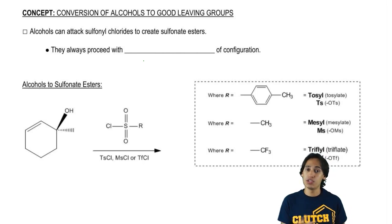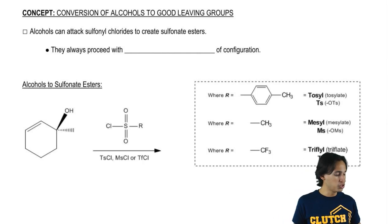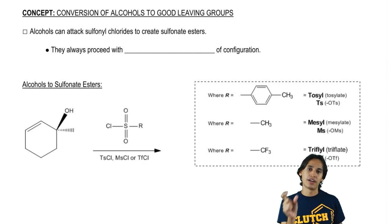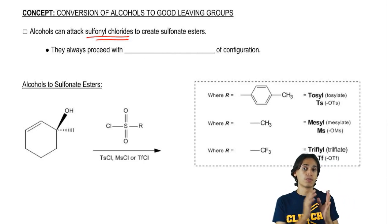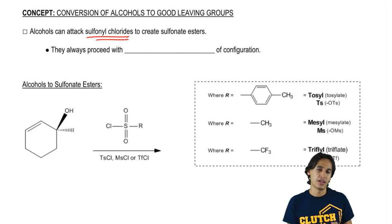How do we turn an alcohol into a sulfonate ester? All we do is we just use the chloride of that sulfonate ester, so we're going to use a sulfonyl chloride to convert the alcohol into a sulfonate ester and I'll show you guys how to do that in just a second.